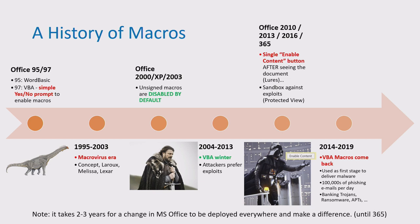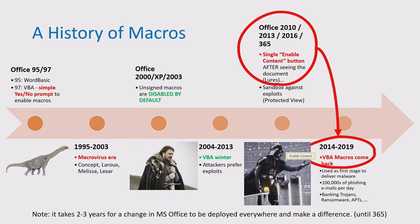Then in 2014 we saw a big comeback from VBA macros, mainly used as a first stage to deliver malware. Every day, even today, there are still hundreds of thousands of phishing emails sent all over the world with malicious macros to deliver banking trojans, ransomware, APTs, etc. The main reason for this return is a big change in the Microsoft Office user interface: since Office 2010, there is a single Enable Content button that allows the end user to run macros.